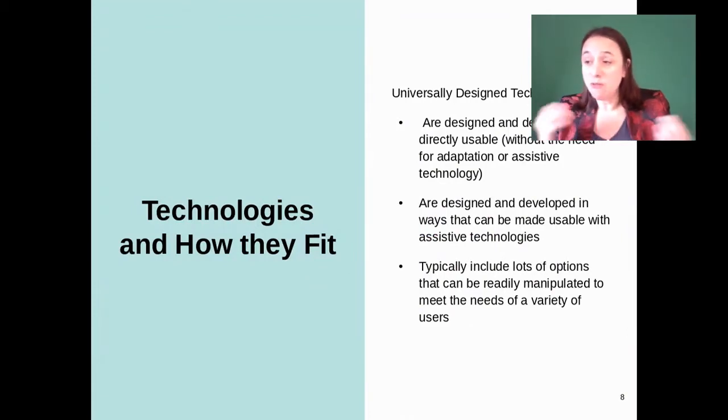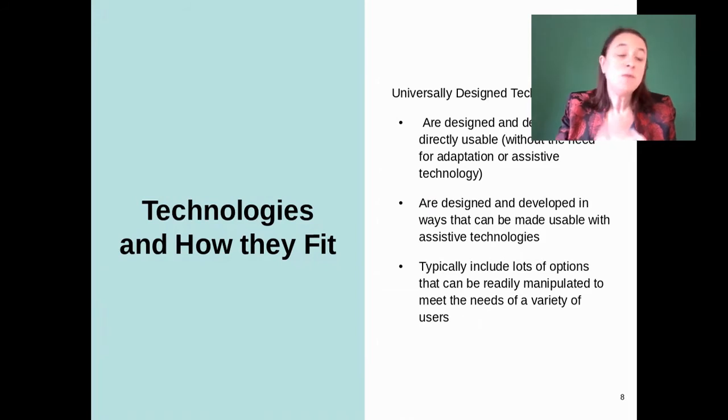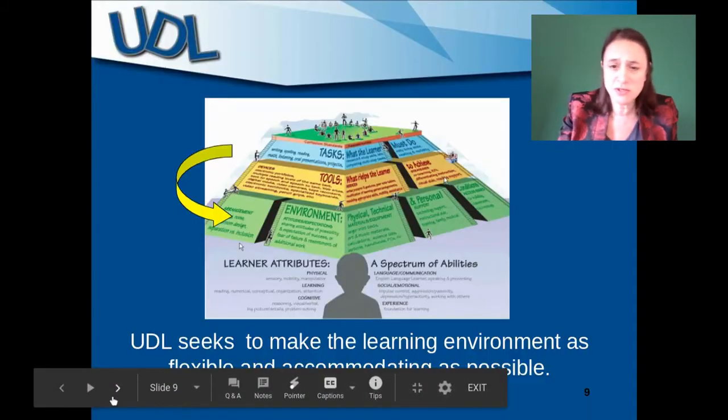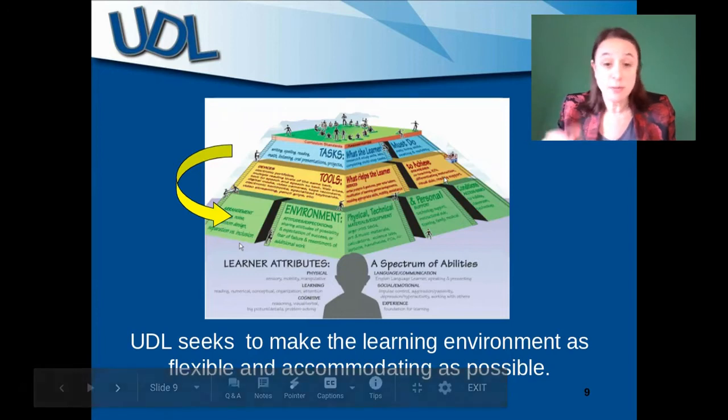We want to make sure if we're using technologies, especially during COVID when many of us have been relying on technologies, that they're usable. We don't want students to have to find different ways to access that material. Even if you're a special education learner or ELL learner, you're still able to understand what's going on in class and access the material. We want them to be usable with assistive technology. If they need a hearing aid, they're able to do so. If they need it translated, they're able to do so. We want to make sure the technology fits the children in our classroom and they have lots of different options on how to access that material, whether they're learning from a phone or an adaptive device.